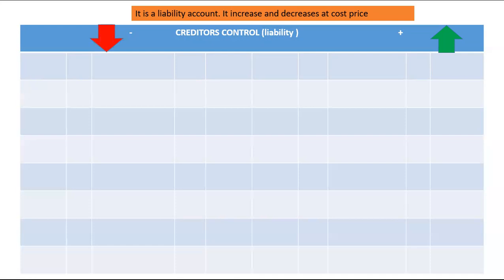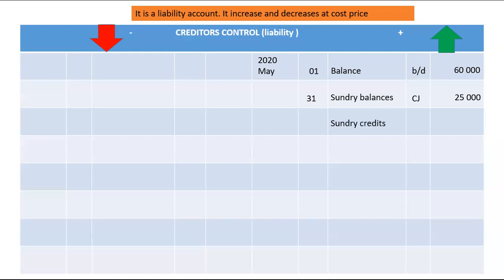It decreases when we repay our creditors, when we're offered a discount by the creditor, or when we return goods to the creditor — recorded in the general credit. Starting with what increases this account: the balance brought down from the previous month is 60,000. Total purchases from the Creditors Journal (CJ) amount to 25,000, and sundry credits from the General Journal amount to 12,000.